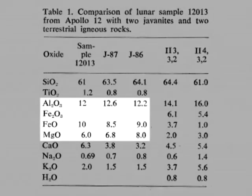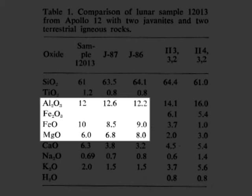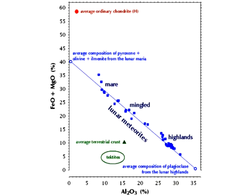Chemically, Apollo 12 sample 12013 had a weight percentage of 12% aluminium oxide. J87 and J86 were 12.6% and 12.2% respectively. For ferrous oxide, sample 12013 was 10%, with its tektite counterparts at 8.5% and 9%. And for magnesium oxide, 6% for Apollo 12 and 6.8% for J87 and 8% for J86.